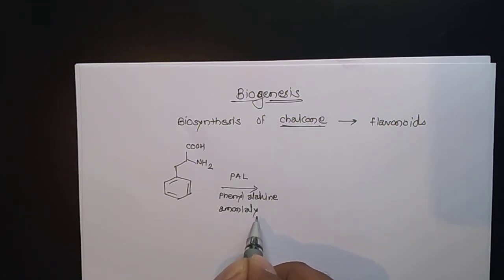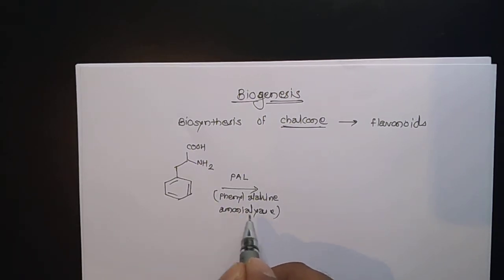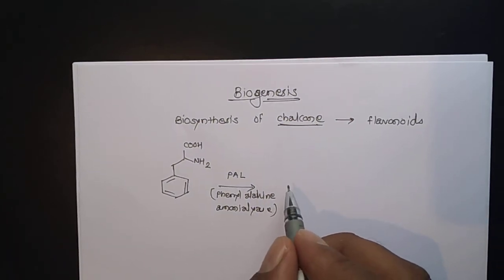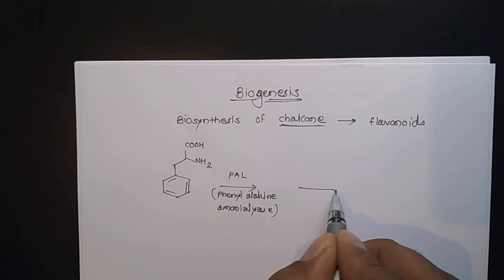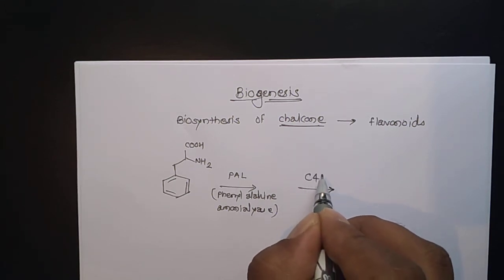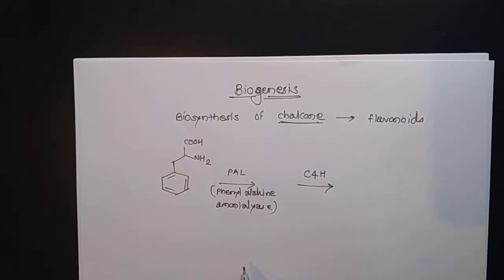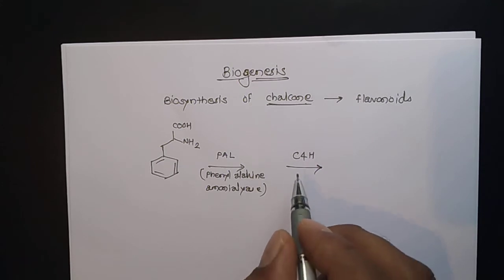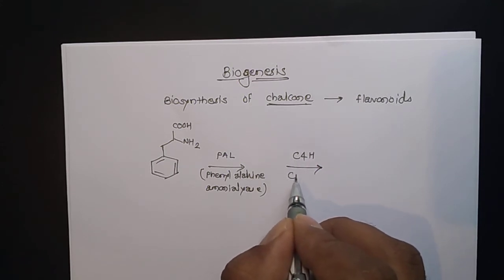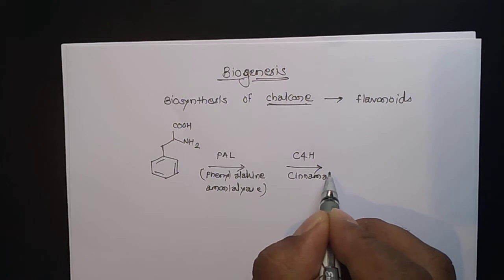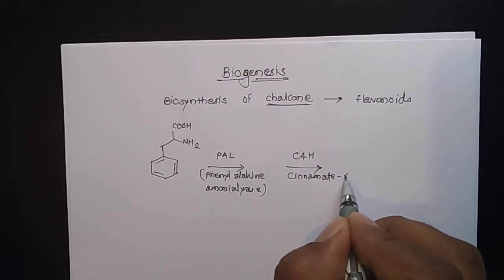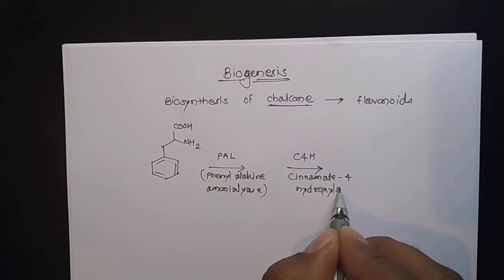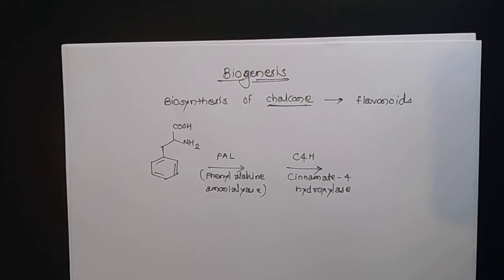From phenylalanine, we carry out a reaction using the enzyme PAL, which is phenylalanine ammonia lyase. Then you get some intermediate, and on that intermediate you have to add C4H, which is cinnamate 4-hydroxylase.